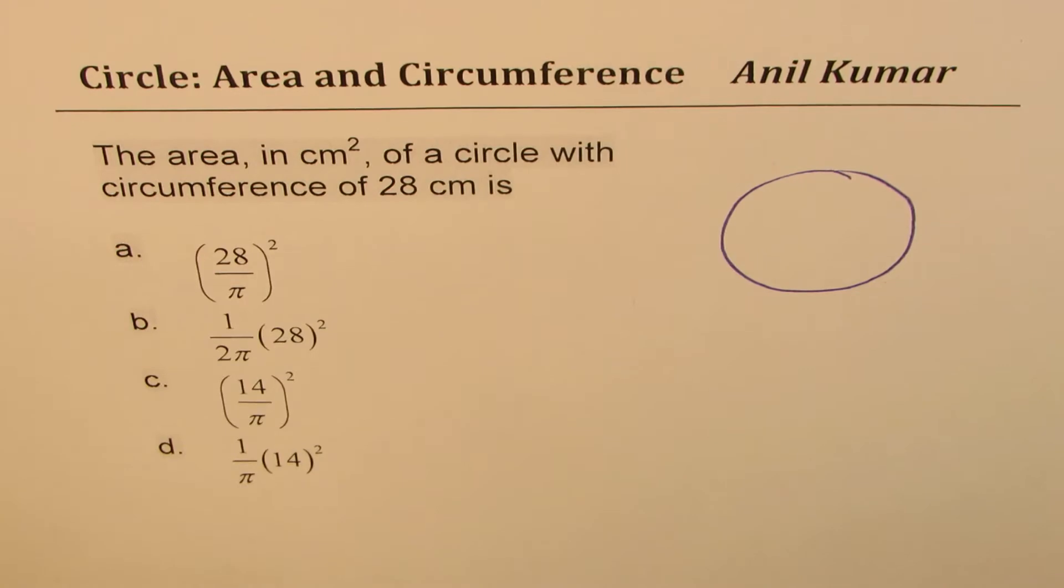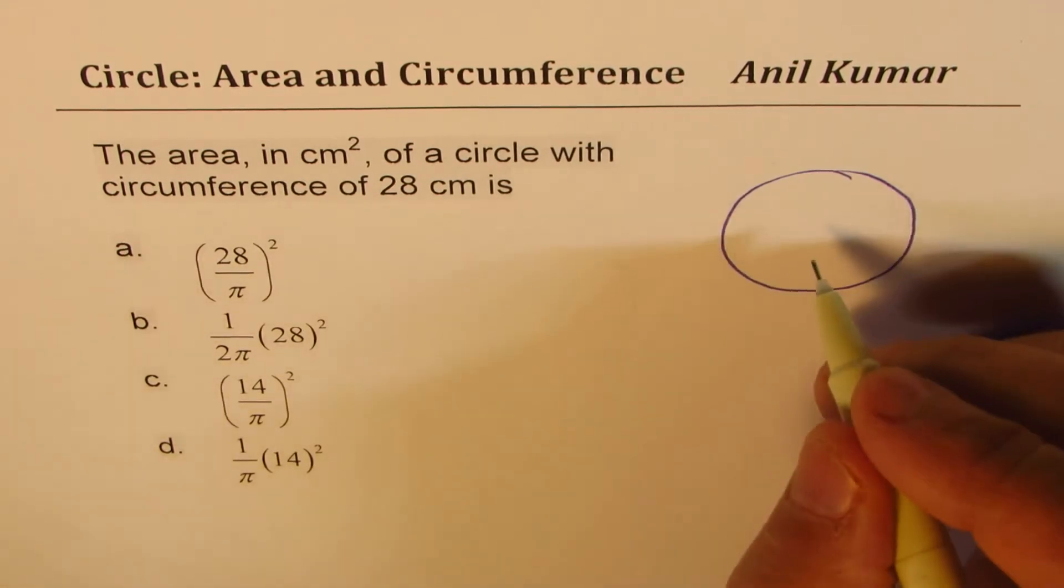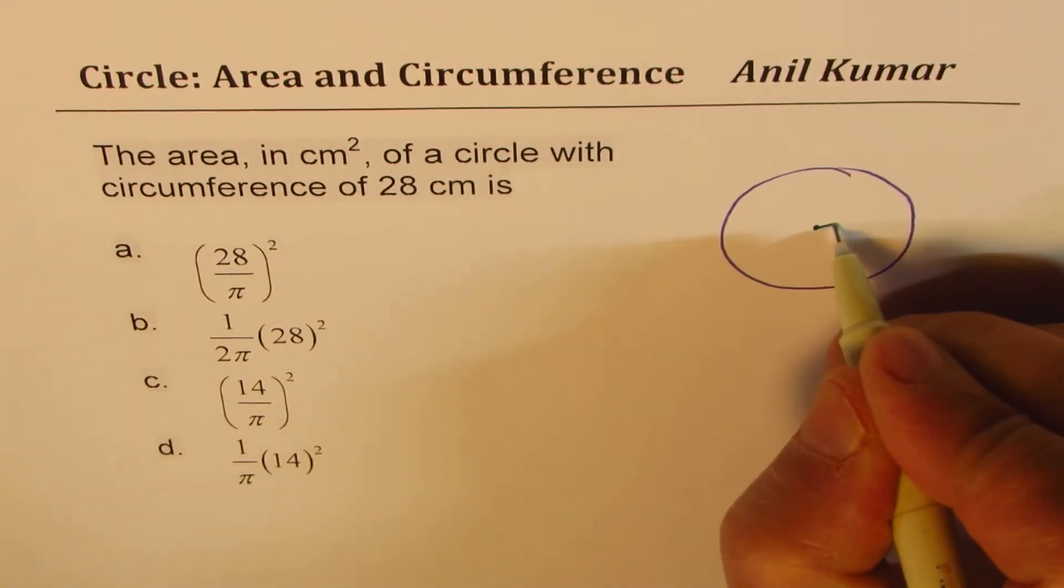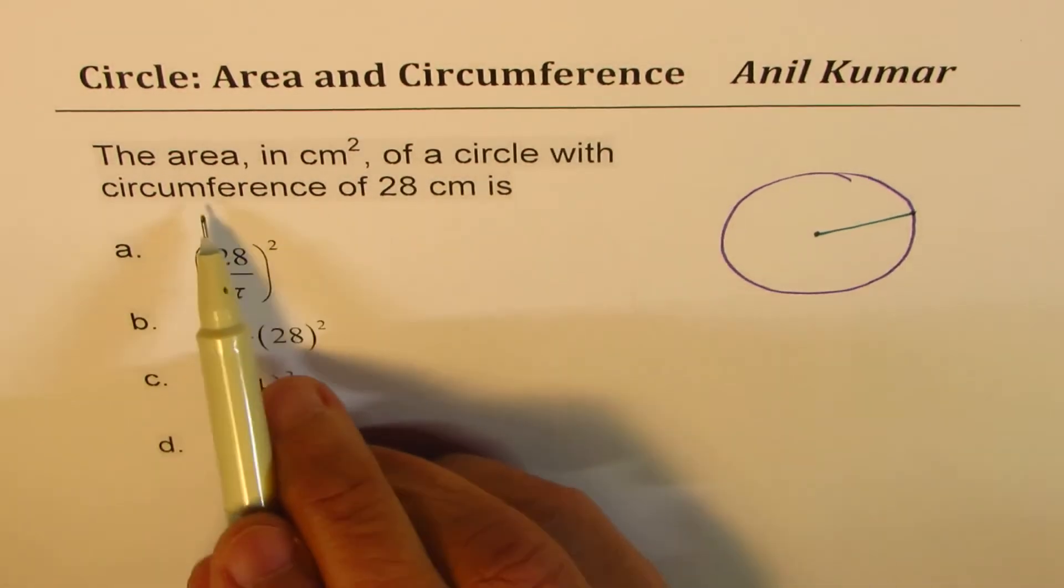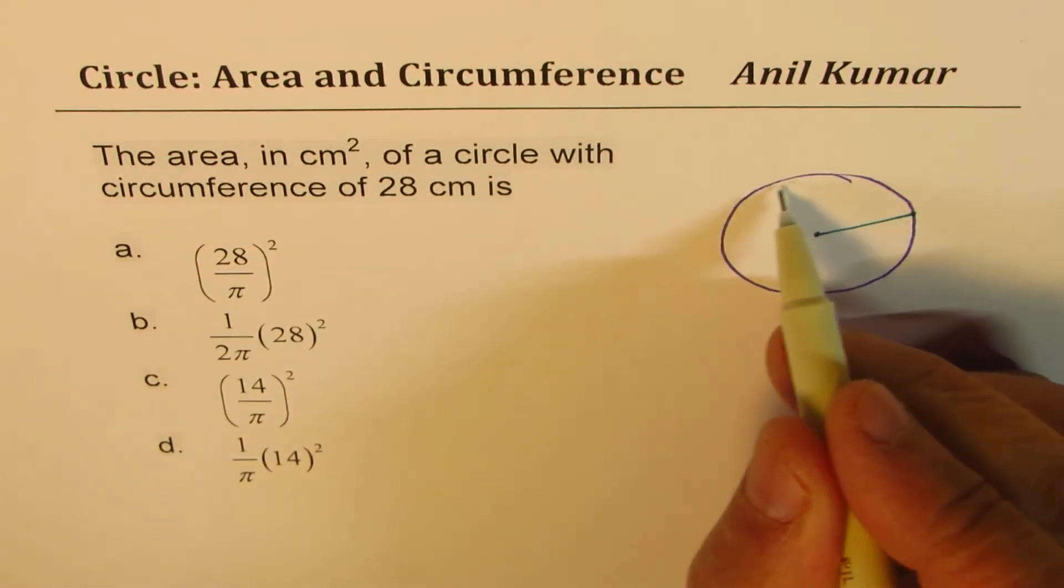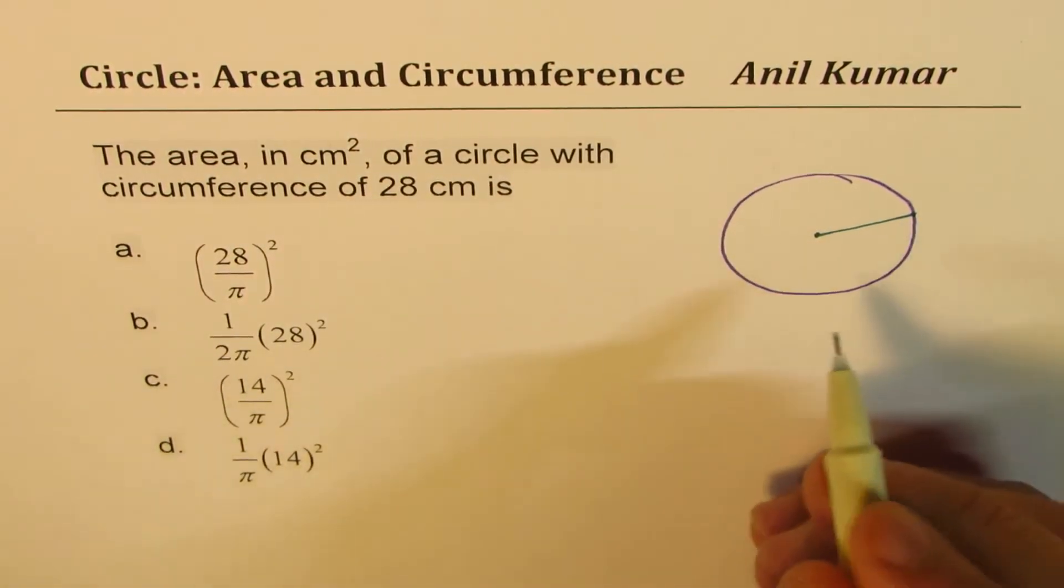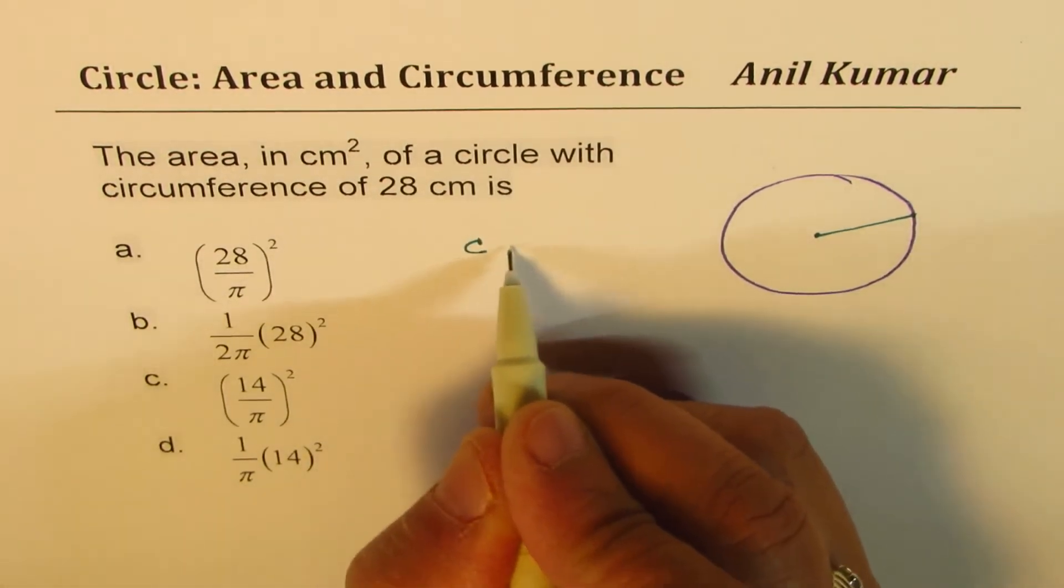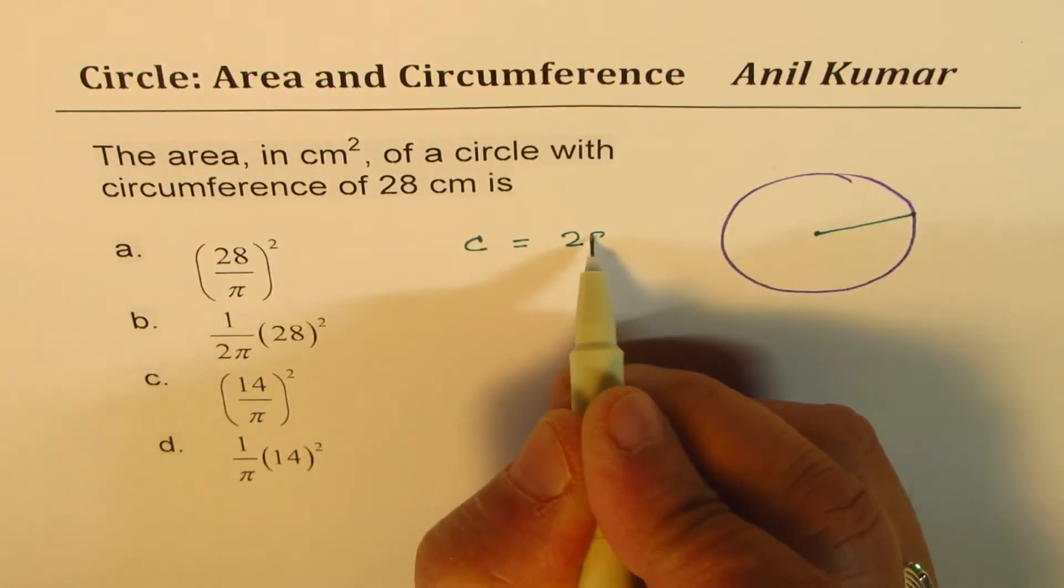So let us say this is the given circle for us. What have we given here? We are given circumference, that means all around the perimeter of the circle. So in this particular case, we are given circumference equals to 28 centimeters.